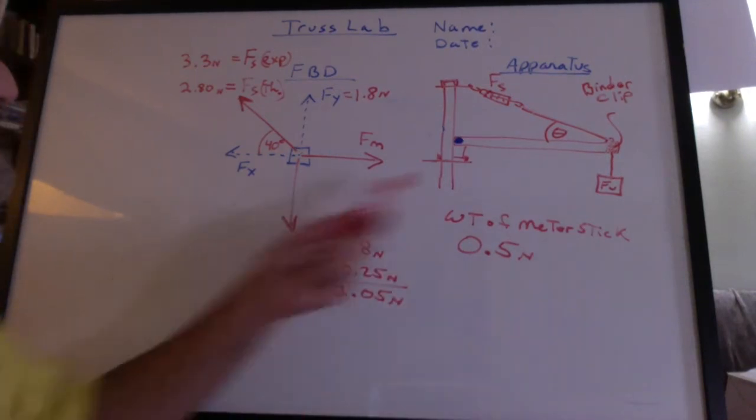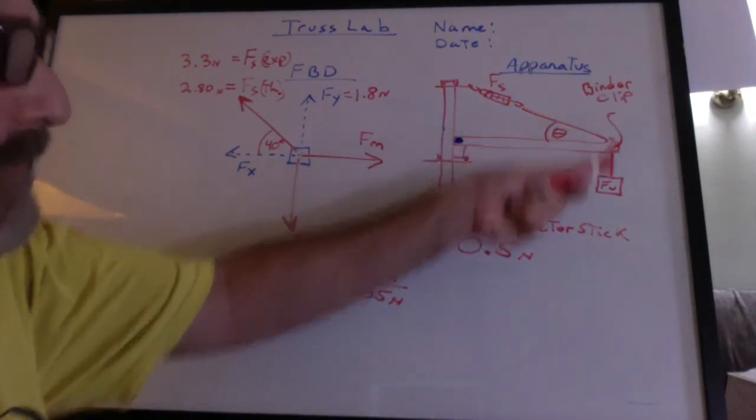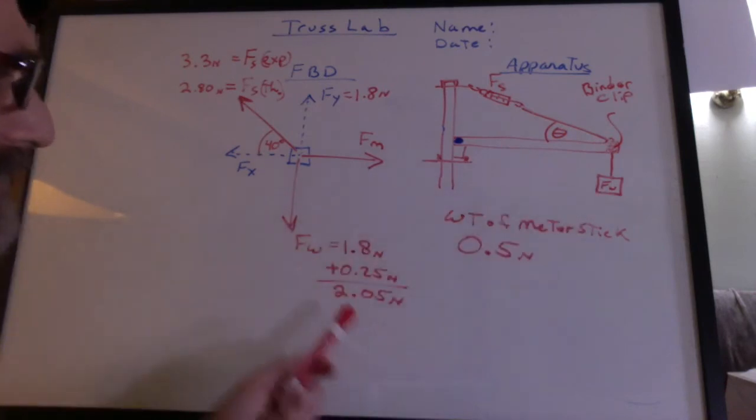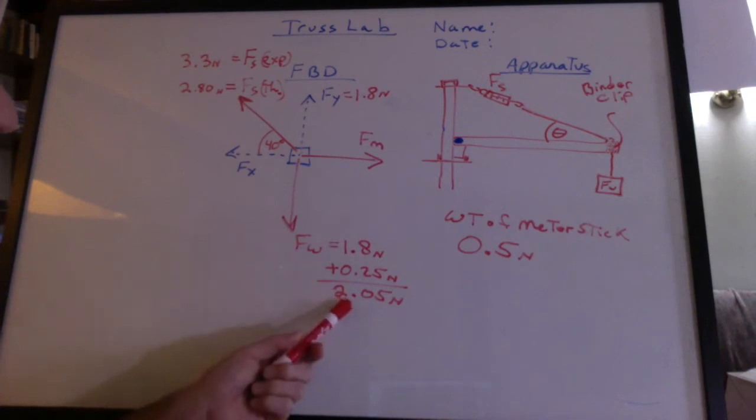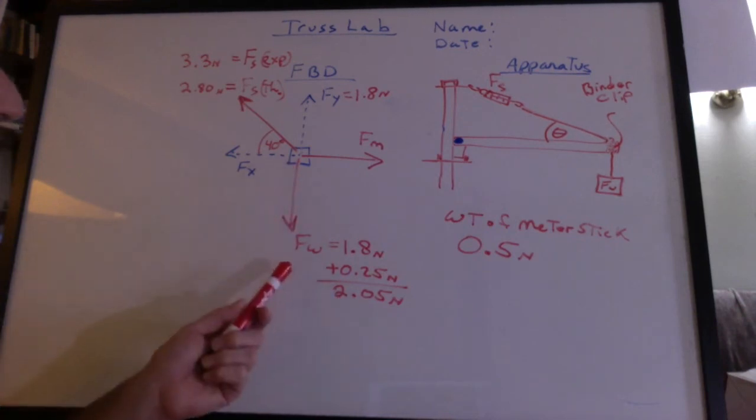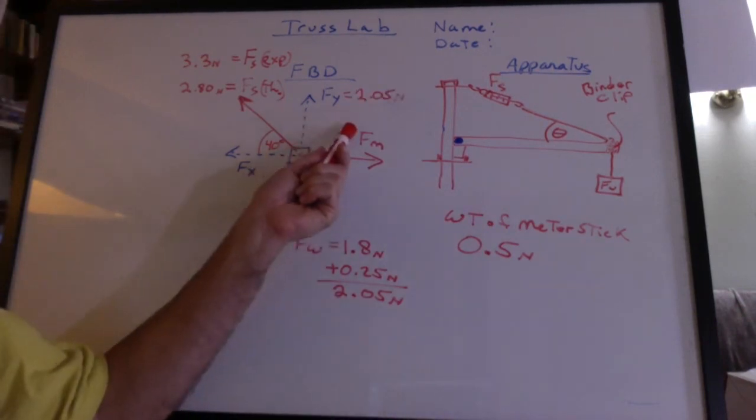All we're going to do is say that the meter stick has a weight going down on this side of 0.25 newtons. And we're going to add it to the weight of the object. So we have 2.05 newtons hanging down. That changes the y component of the string.